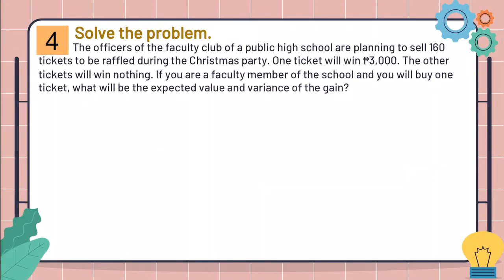For example number 4, the officers of the faculty club of a public high school are planning to sell 160 tickets to be raffled during the Christmas party. One ticket will win P3,000. The other tickets will win nothing. If you are a faculty member of the school and you will buy one ticket, what will be the expected value and the variance of your gain?